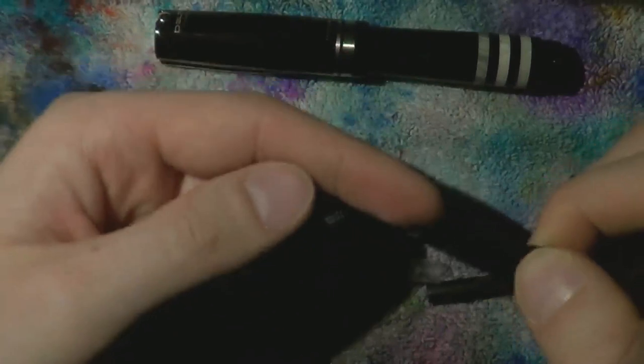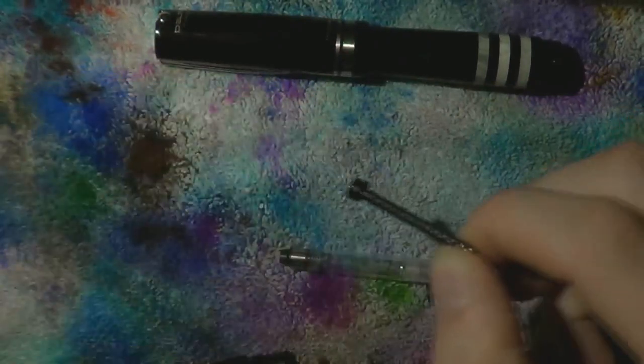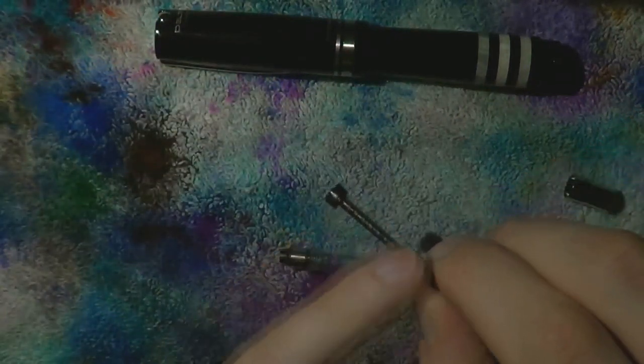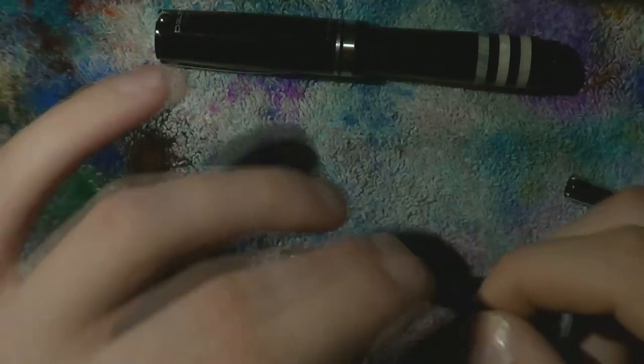Put a little bit of silicon grease right around here. To lubricate it, put a little bit of silicon grease right on these threads for smooth operation.